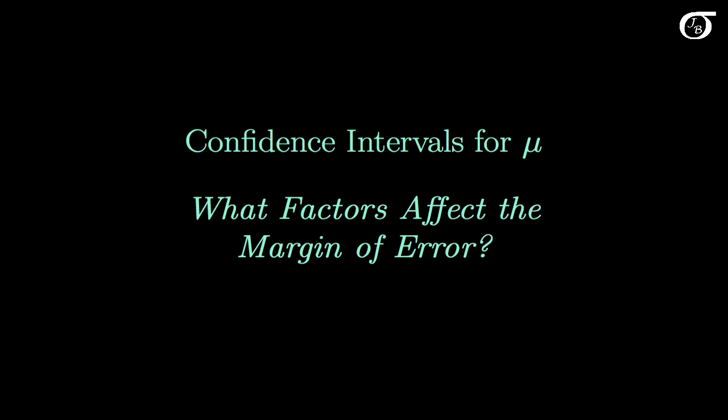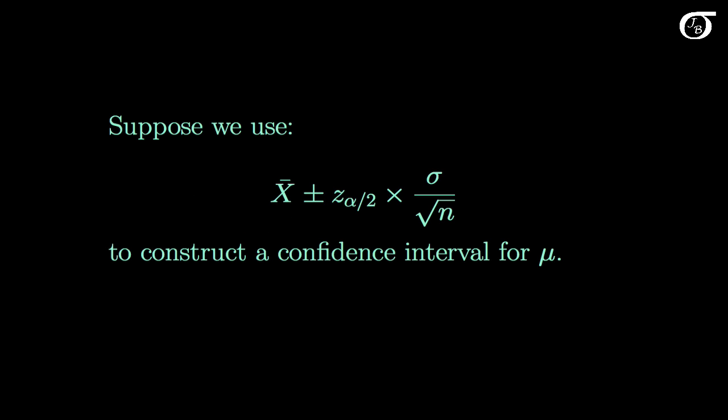Let's look at what factors affect the margin of error in confidence intervals for the population mean mu. Suppose we use this confidence interval formula X ± z_{α/2} × σ/√n to construct a confidence interval for the population mean mu. This would be the appropriate method if we were sampling from a normally distributed population where the population standard deviation sigma is known.